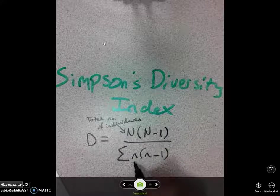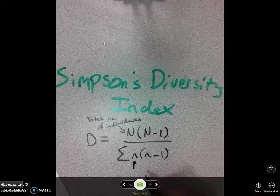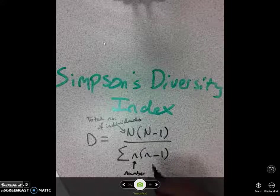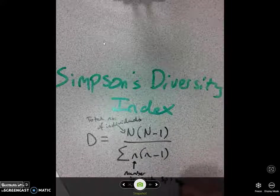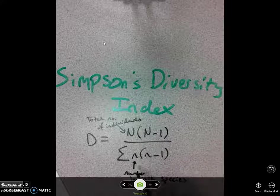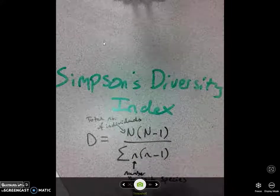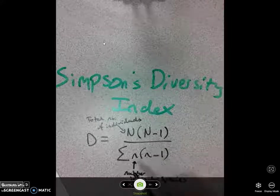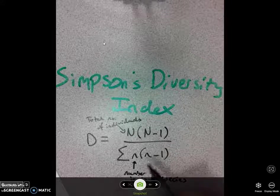Now down here you've got little n. Now what does that mean? Well, little n is the number of individuals in each species. So there can actually be several little n's or several values of little n in a given habitat. If you've got 10 species in a given habitat, then you'll have 10 values of little n.